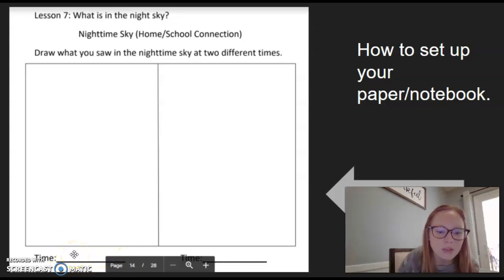So if you go outside at 9:30 at night, then you'll write 9:30 p.m. and you'll draw a picture of what you see.